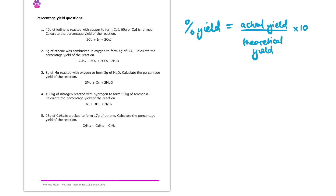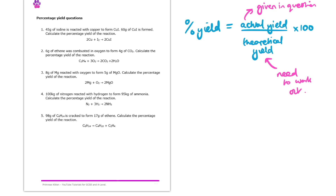This is very important: we're generally given the actual yield in the question. The theoretical yield is something we need to work out using molar ratios in the formula. We can either use mass or moles for each of these. Throughout my workings for the next few questions, I'll probably use moles, but either works just as well.